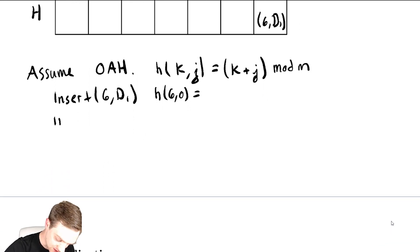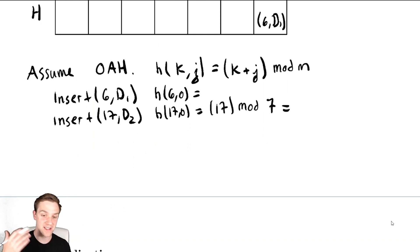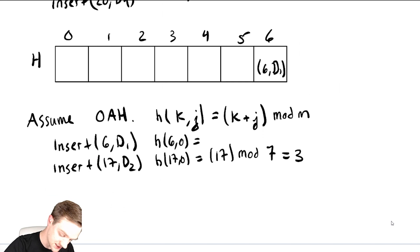Now let's say we did an insert with 17, d2. That's h of 17, 0, is 17 mod m, and m here is 7. So this equals the remainder when I divide 17 by 7 will be 3. So at location 3, I'll input 17, d2.